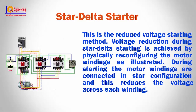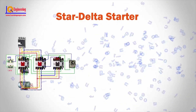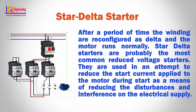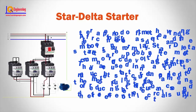During starting, the motor windings are connected in star configuration and this reduces the voltage across each winding. After a period of time, the windings are reconfigured as delta and the motor runs normally. Star delta starters are probably the most common reduced voltage starters. They are used in an attempt to reduce the start current applied to the motor during start, as a means of reducing disturbances and interference on the electrical supply.